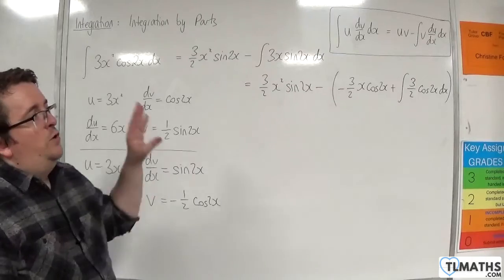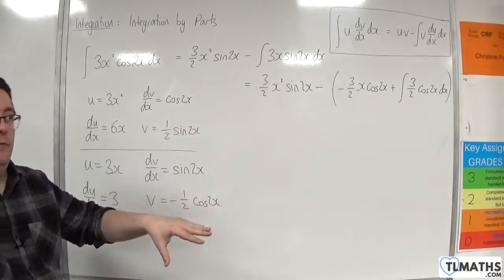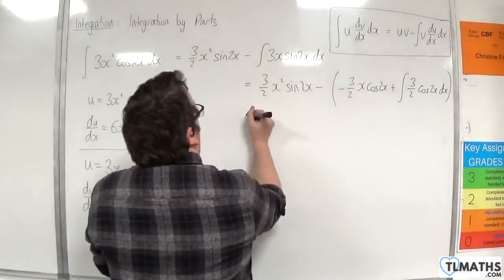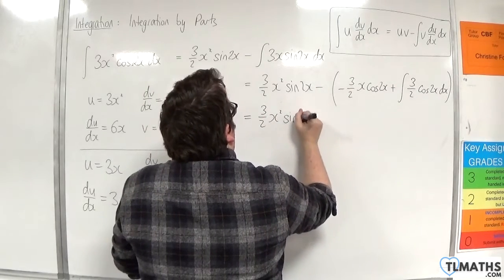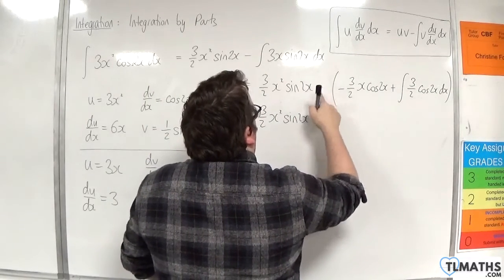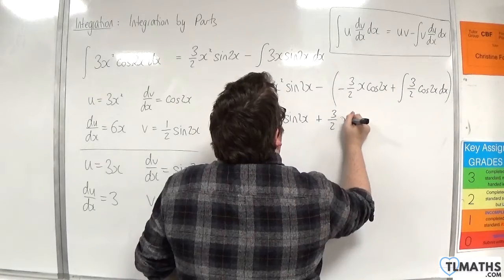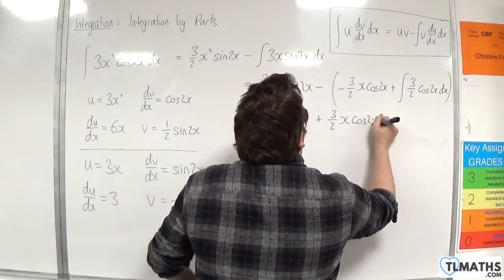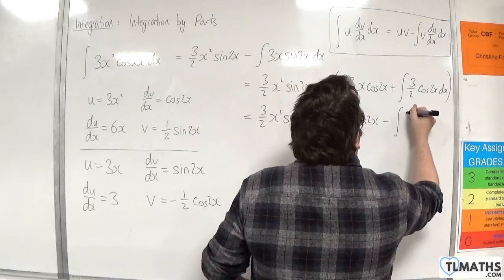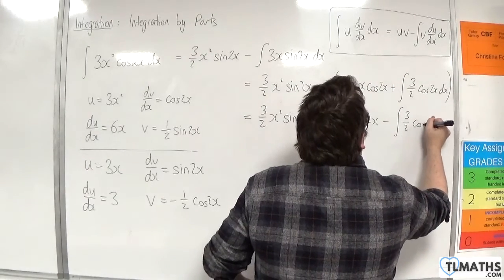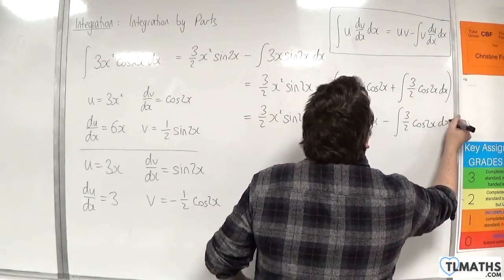Now I'm going to deal with the bracket first before I deal with the integration. So 3 halves x squared sine 2x. Then we've got take away a minus. So plus 3 halves x cosine 2x. And then we have take away the integral. So take away the integral of 3 halves cosine 2x dx.